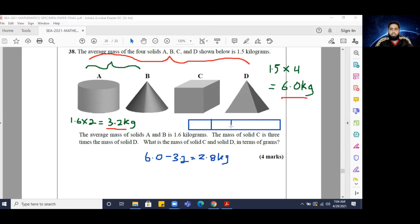I'm going to realize that this 2.8 kilograms can actually be broken up into four equal parts, and three of those belong to C and one of those belong to D.